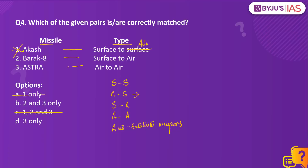Next is Barak 8, which is an Indo-Israeli surface-to-air missile, making statement 2 correct. The Barak 8 missile can defend against any type of airborne threat — for example, aircraft, helicopters, anti-ship missiles, as well as ballistic and cruise missiles. Statement 3 is also correct because Astra is an air-to-air missile, developed by DRDO. Astra is the first air-to-air missile developed by India and is a beyond-visual-range active radar homing air-to-air missile. Therefore the right answer is option B — 2 and 3 only.